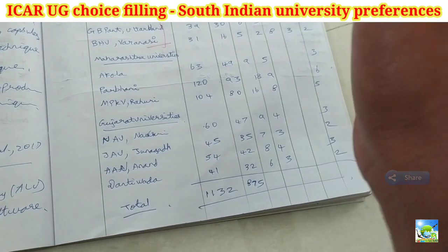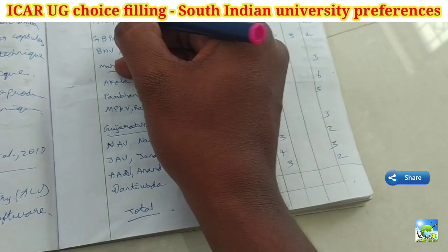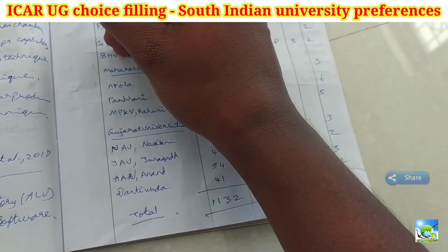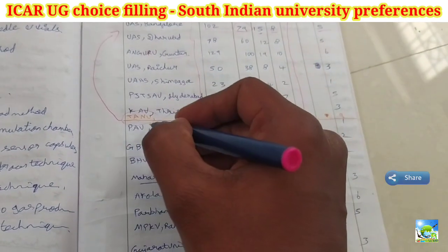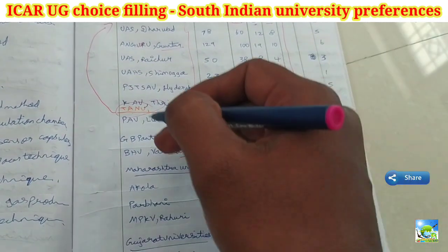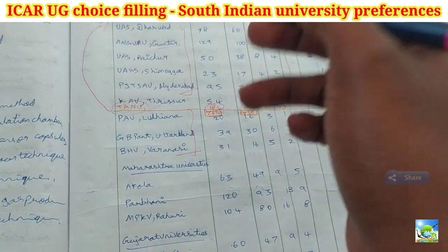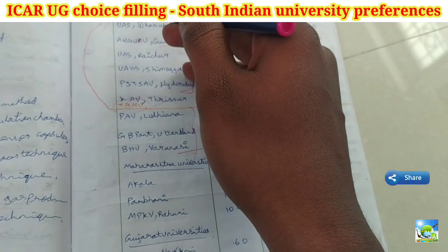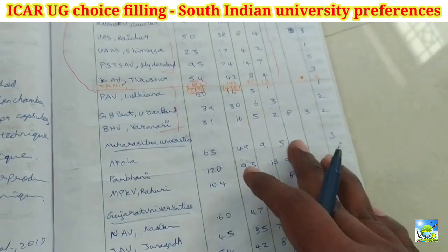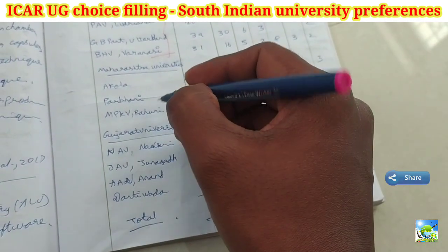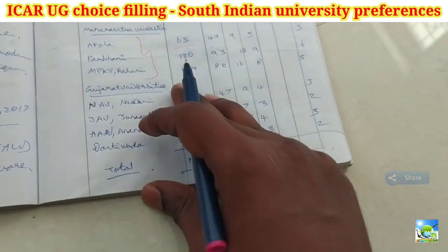After KAU Kerala Agriculture University, you can give TNAU — or if you are interested in studying in other states, you can choose accordingly. If you are from states other than Tamil Nadu — such as Karnataka, Andhra Pradesh, or Kerala — you can give TNAU next to UAS Bangalore. Important note: TNAU is only for Tamil Nadu students in terms of state quota, so don't confuse this choice preference. For non-Tamil Nadu students, give TNAU just after UAS Bangalore.